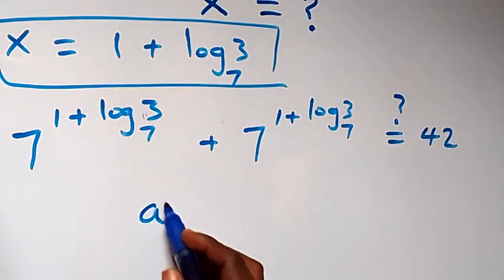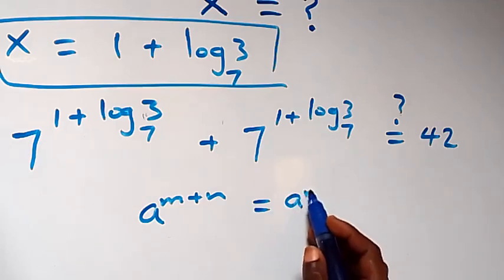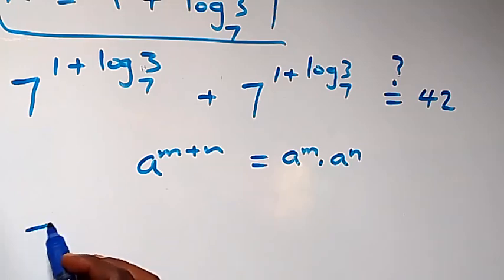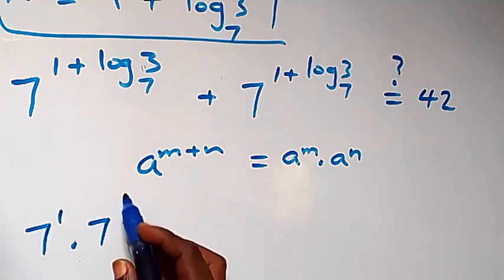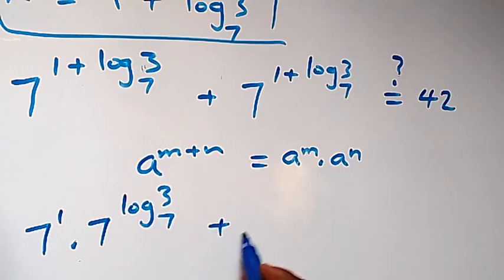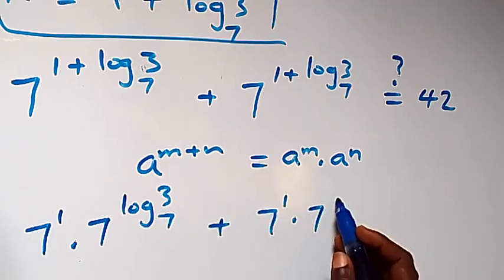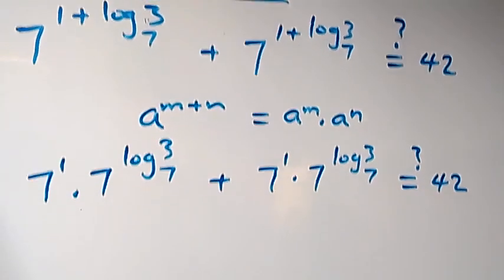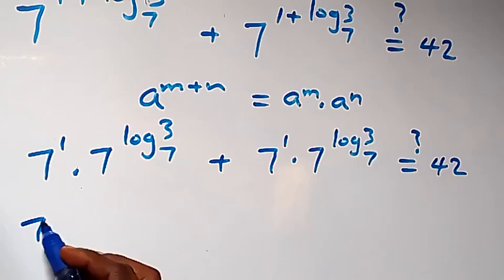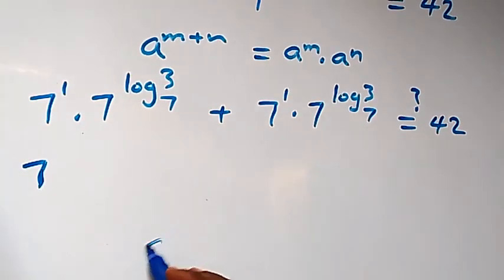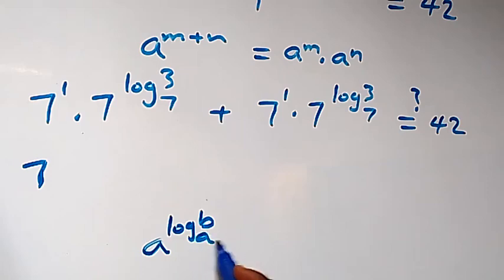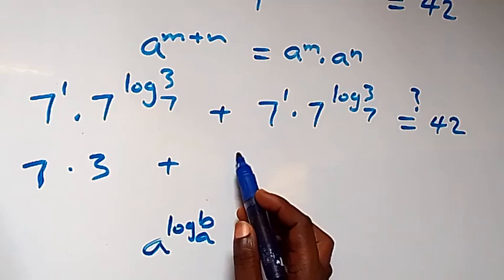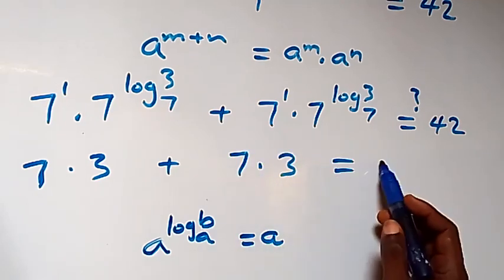From the law of indices, a raised to power (n plus n) equals a raised to power n times a raised to power n. Separating this gives 7 raised to power 1 times 7 raised to power (log 3 to base 7), plus the same again, equals 42. Since 7 raised to power 1 is 7, and applying the identity a raised to power (log b to base a) equals b, we get 7 times 3 plus 7 times 3 equals 42.